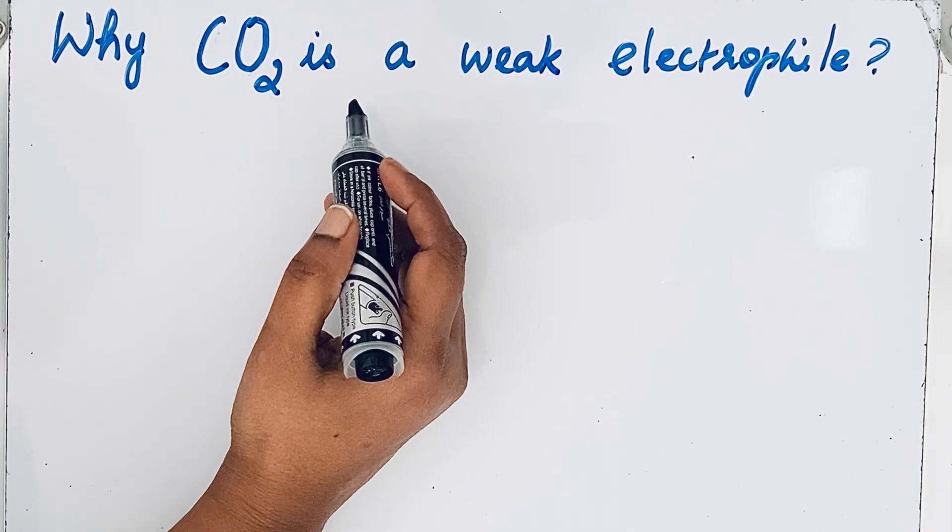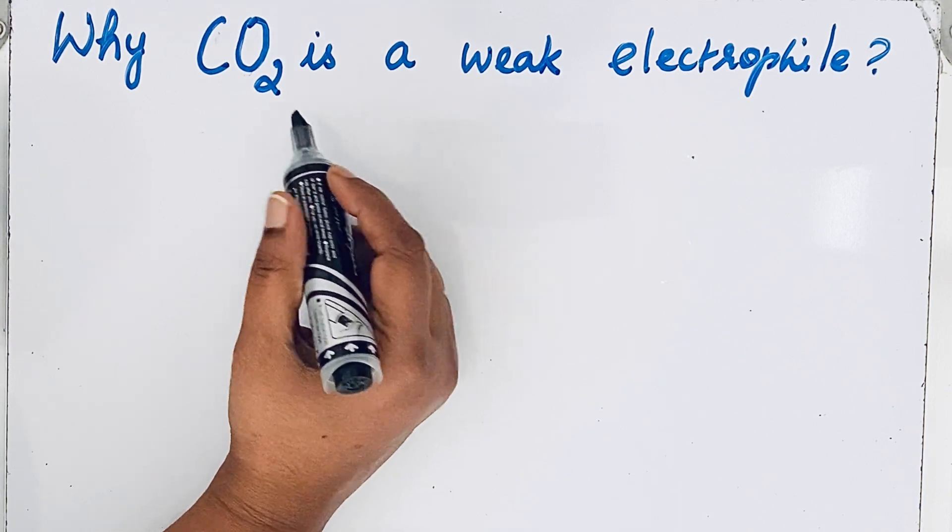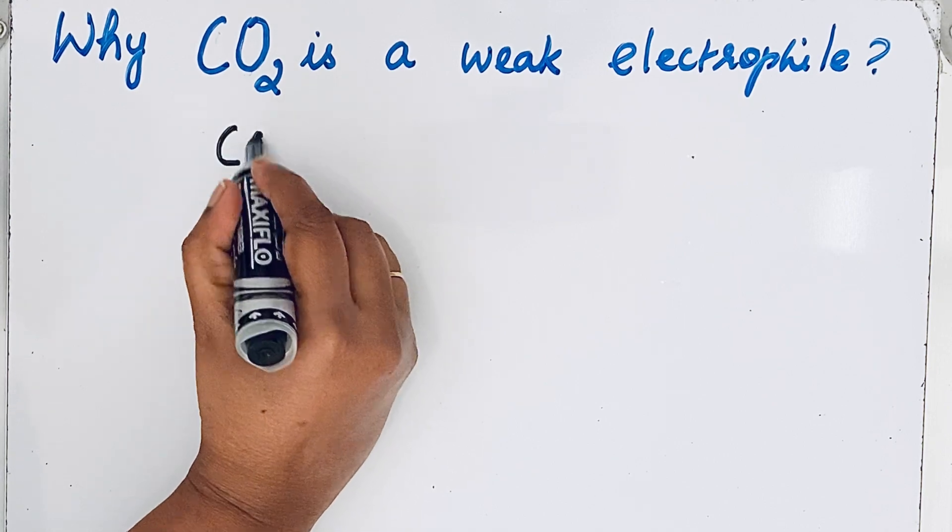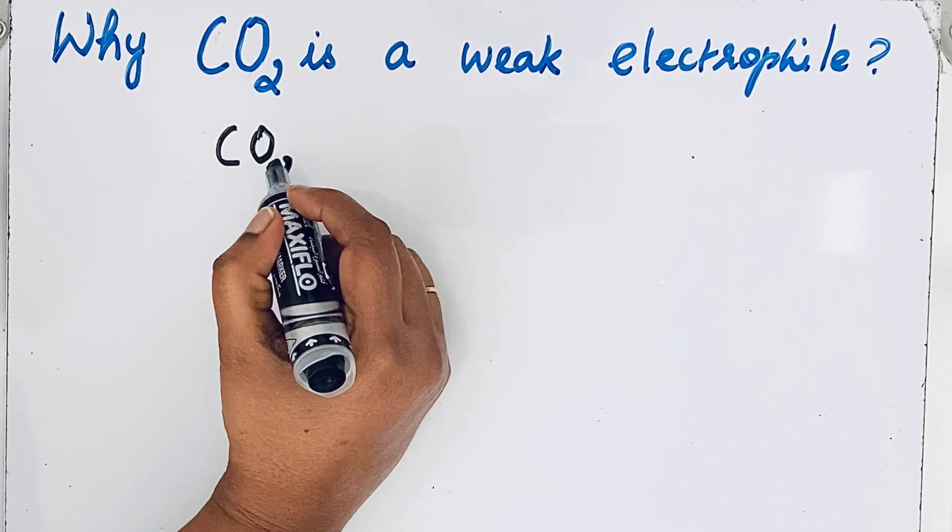To know why carbon dioxide acts like a weak electrophile, we should draw the Lewis structure of carbon dioxide. For that, we should know the valence electrons.